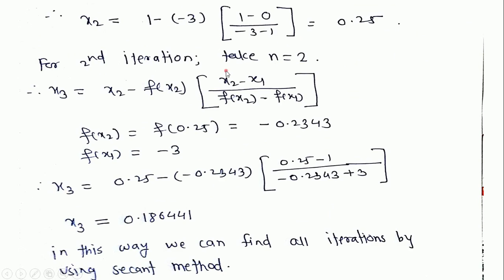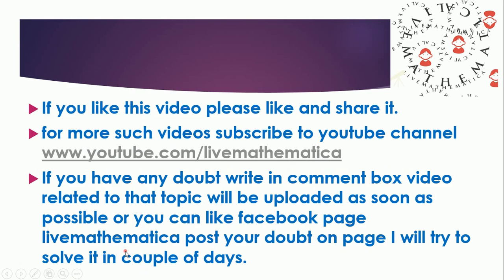For the second iteration, take n equal to 2. x3 equals x2 minus f of x2 times x2 minus x1, divided by f of x2 minus f of x1. Substituting the values of x2 and x1 and calculating f of x2 and f of x1, we get x3 equal to 0.186441. In this way we can calculate all iterations using the secant method.